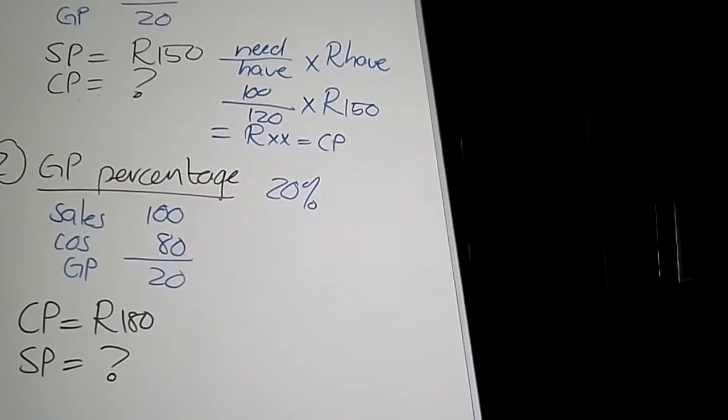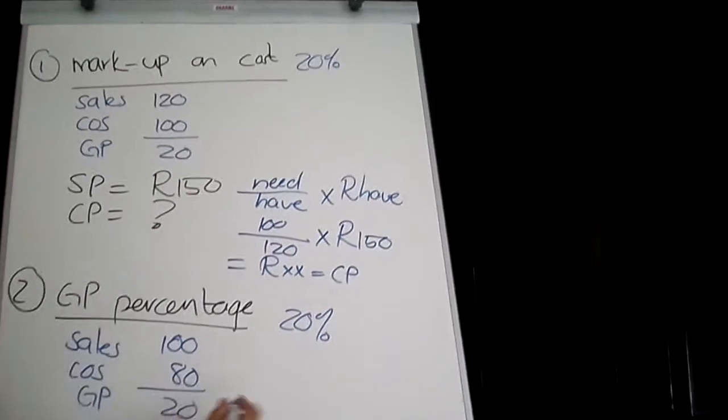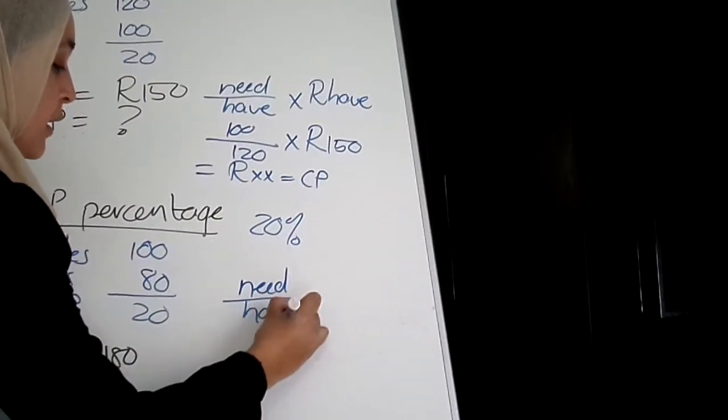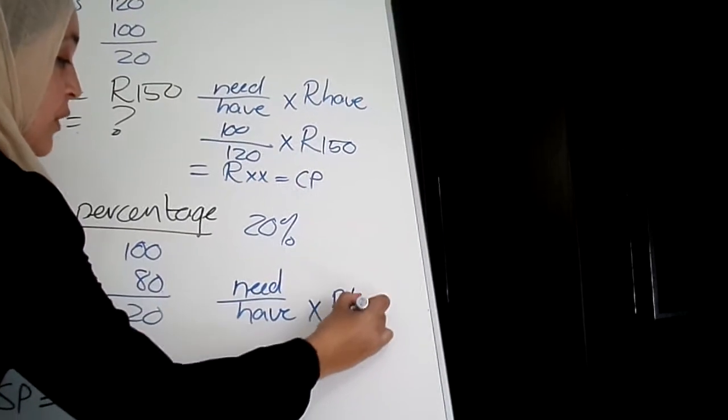You follow the same formula. You say what I need divided by what I have, multiplied by the Rand value of what I have.